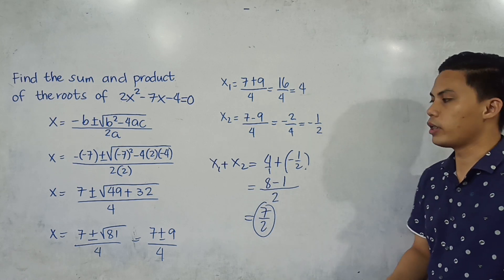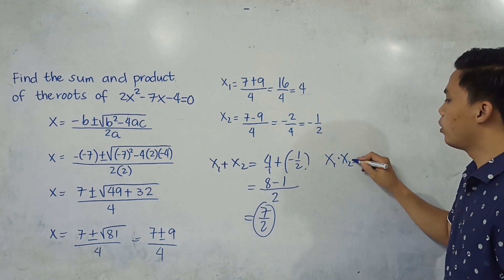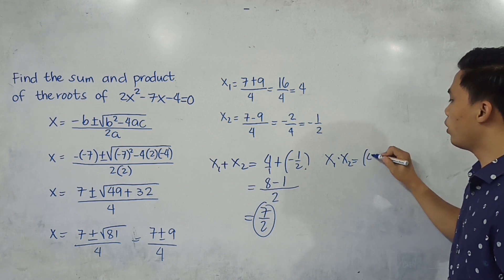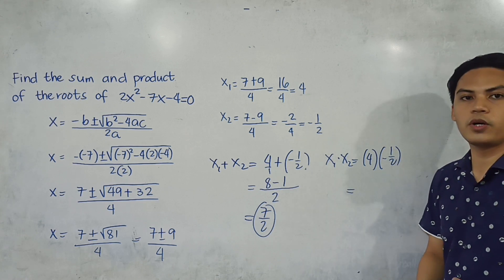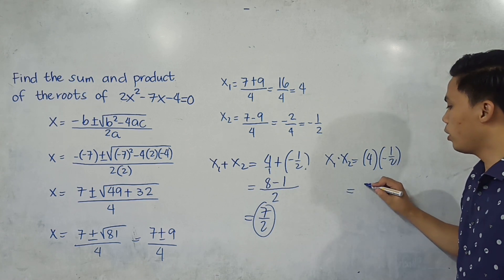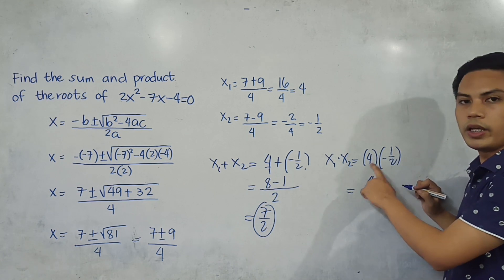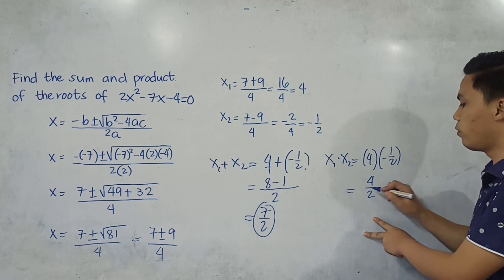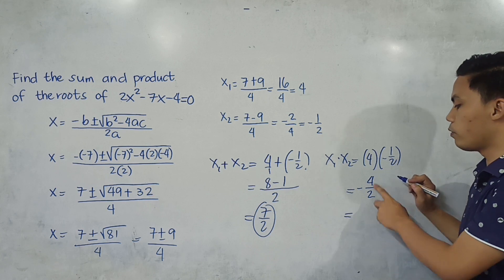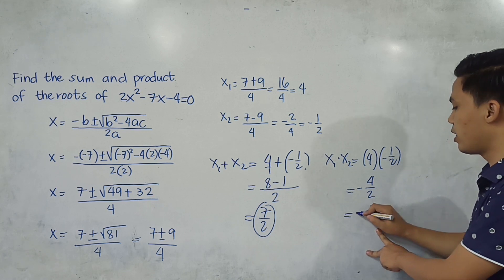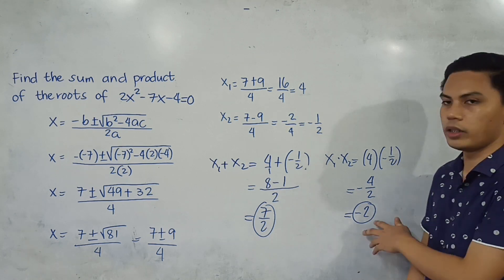Now, how about the product? We have x sub 1 times x sub 2, that is 4 times negative one-half. 4 times 1 over 2 gives 4 over 2. Since we multiplied a positive and a negative, the result is negative. So negative 4 halves, simplified: 4 divided by 2 gives negative 2. The product of the roots is negative 2.